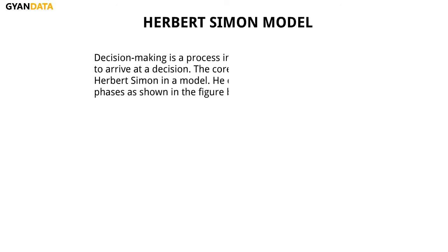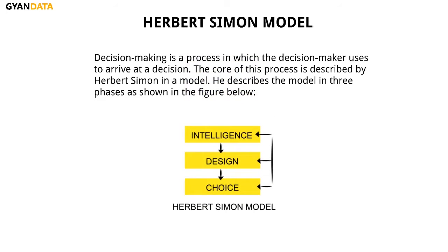Herbert A. Simon, the Nobel Prize winning researcher, shows that the human went through three essential stages in the act of problem solving. He called these the intelligence, design and choice stages. Decision making can also be considered as a type of problem solving. Herbert Simon has given a model to describe the decision making process, and Herbert Simon aims to understand the processes that participate in human decision making.